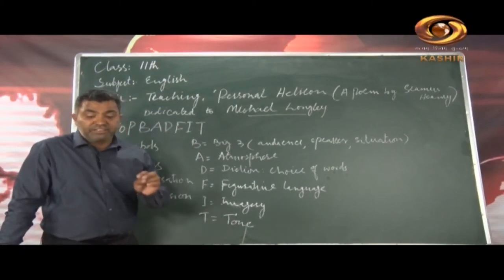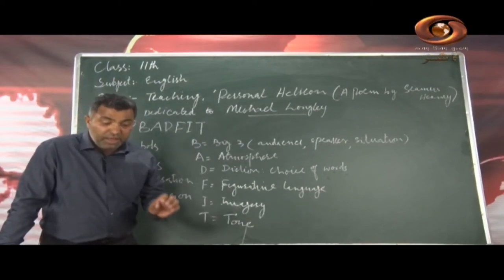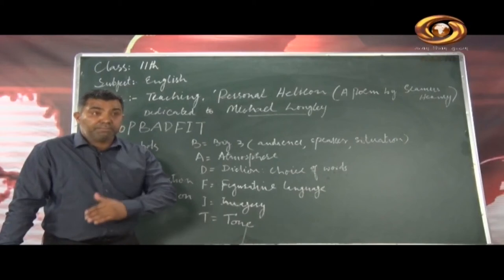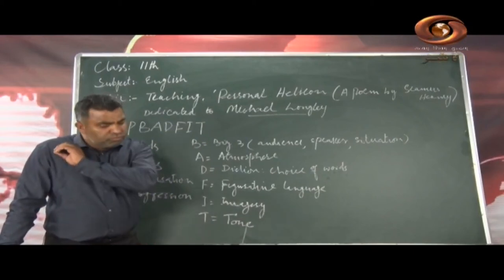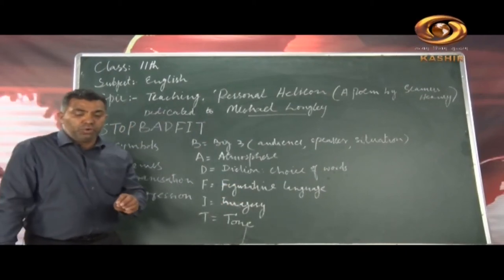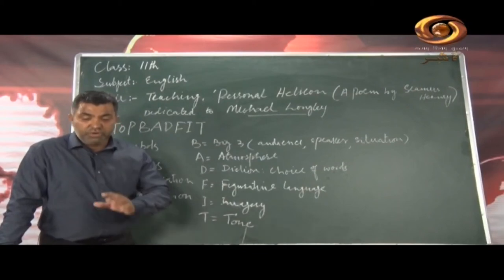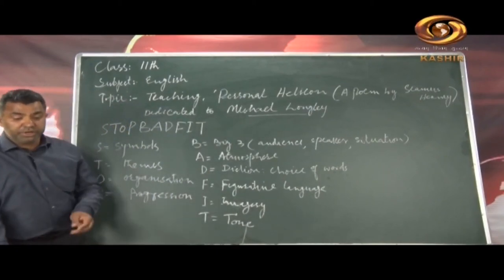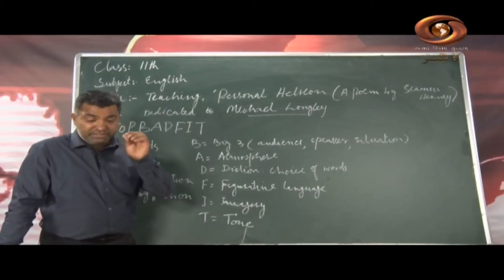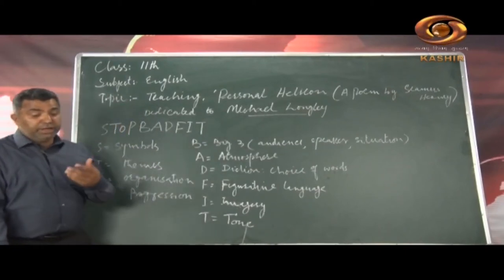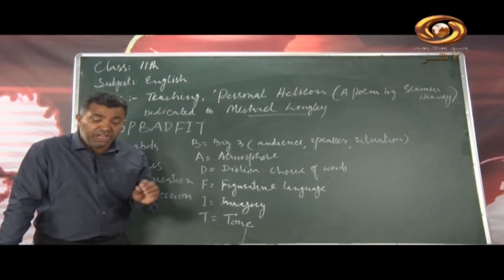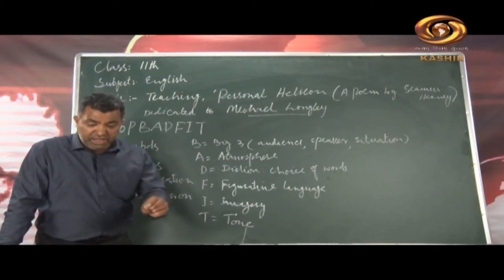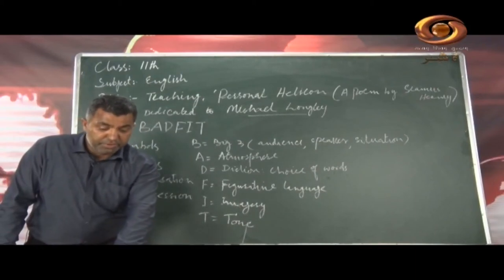The poem is also full of assonance. For example, the 'u' sound is repeated in 'pumps,' 'buckets,' 'fungus,' 'bucket,' and 'plummeted.' The 'o' sound recurs in 'drop,' 'moss,' 'hover,' 'bottom,' 'rope,' 'so,' and 'no.' The 'i' sound appears in 'brickyard,' 'rich,' 'spring,' and 'dignity.' These are clear examples of assonance throughout the poem.